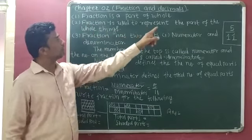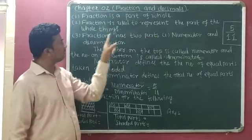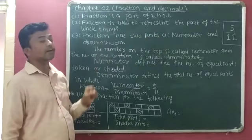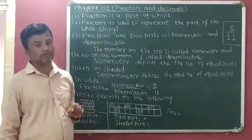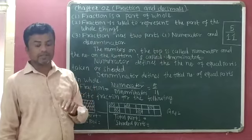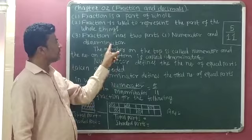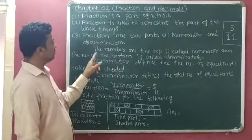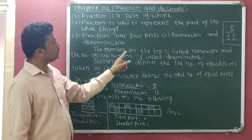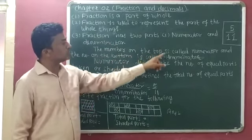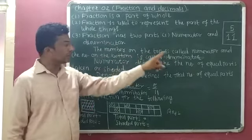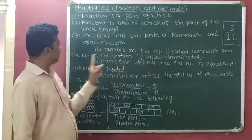Third point: a fraction has two parts — first, numerator, and second, denominator. The number on the top is called the numerator and the number on the bottom is called the denominator.